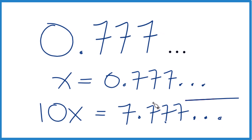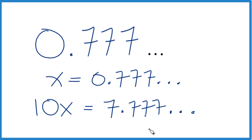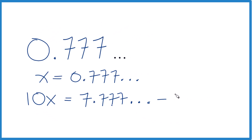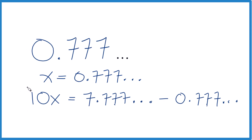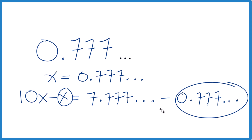If I could get rid of this decimal part, we'd have whole numbers and could convert pretty easily. So why don't we subtract 0.777 here — that way it's gone, we'd be left with 7. But we need to do it to this side too. Here's the trick: because this is equal to x, we can just say minus x. We did the same thing to both sides, so we didn't really change anything.